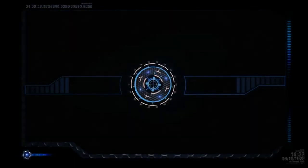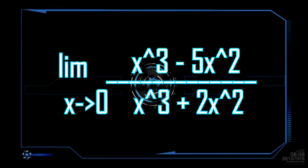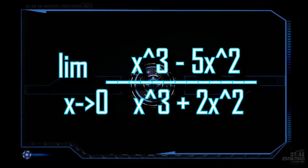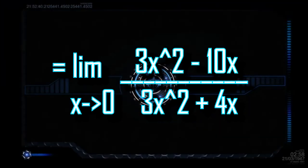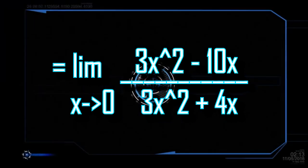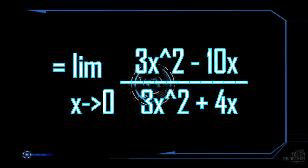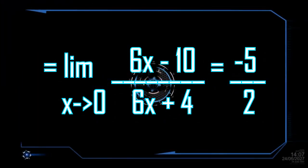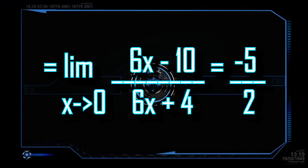If the application of L'Hôpital's rule results in a fraction which is also indeterminate, the process may be repeated. Take for example the limit of x³ minus 5x² over x³ plus 2x² as x approaches 0. Getting its derivatives would result to 3x² minus 10x over 3x² plus 4x. When substituted with 0, it is still undefined. In this case, we can repeat the process. Get its derivatives again, and the result would be 6x minus 10 over 6x plus 4. Now we have an answer, which is negative 5 over 2.